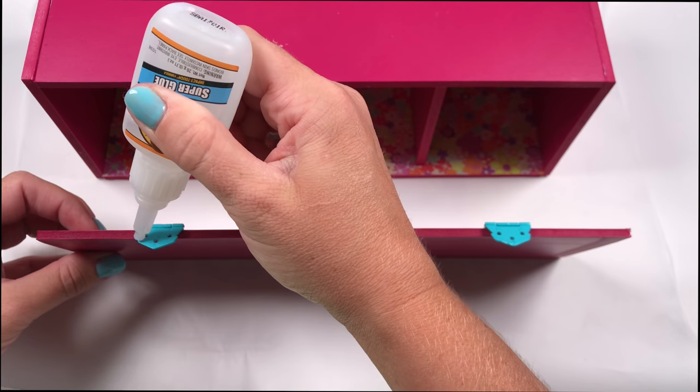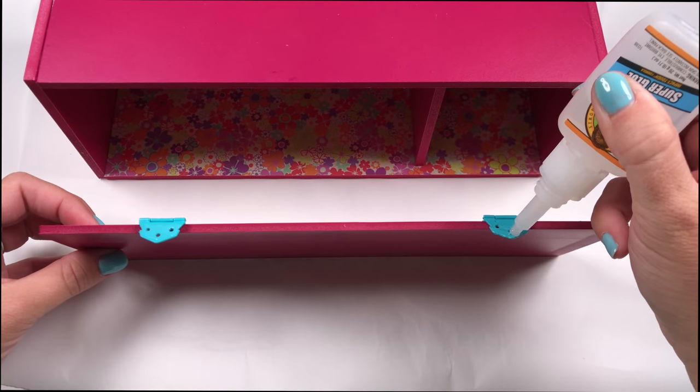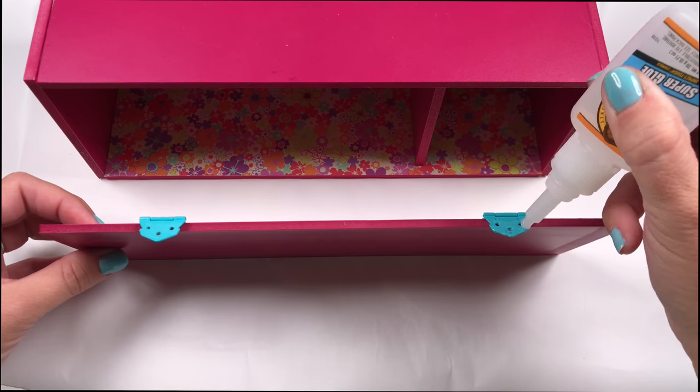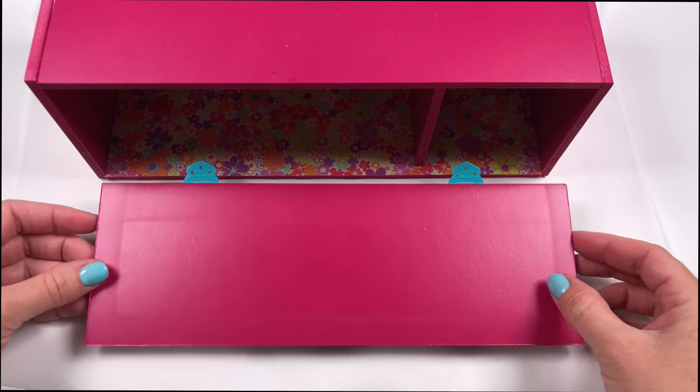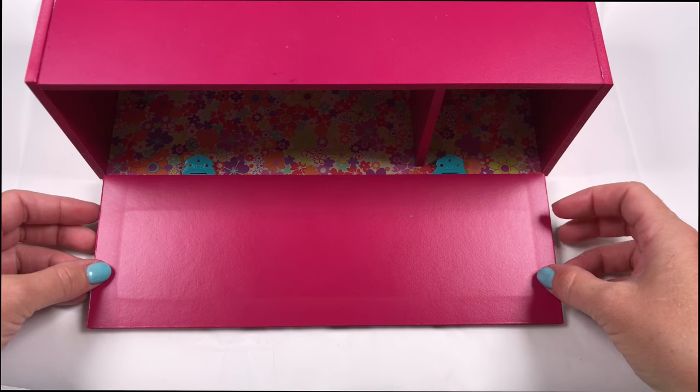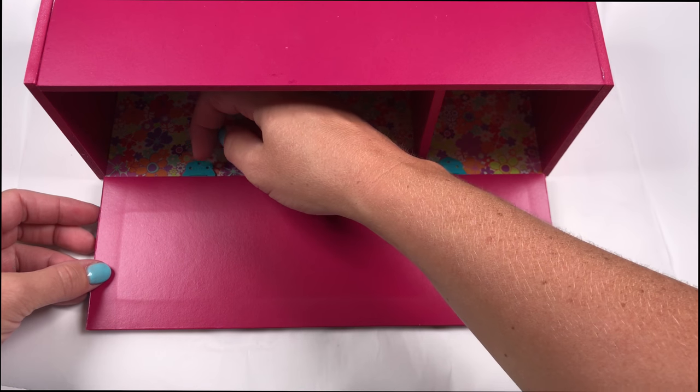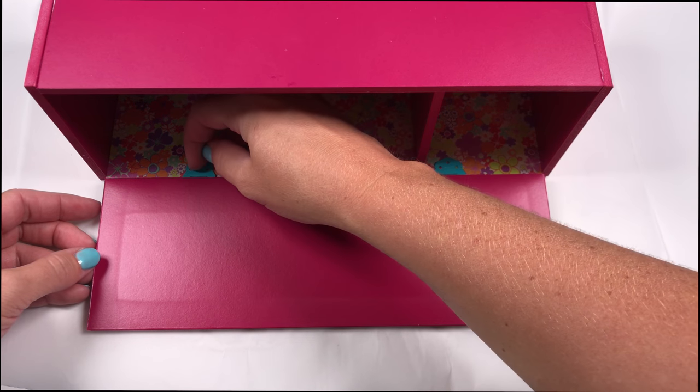The hinges are going to be on the inside of the locker, and then the ones that you've already glued on are going to be on the outside of the locker door. So lay it down flat on your surface. Make sure you line it up inside the top and the bottom of the locker, so when you close it, it's not hanging off. Again, let it completely dry, and you'll have a working locker door.